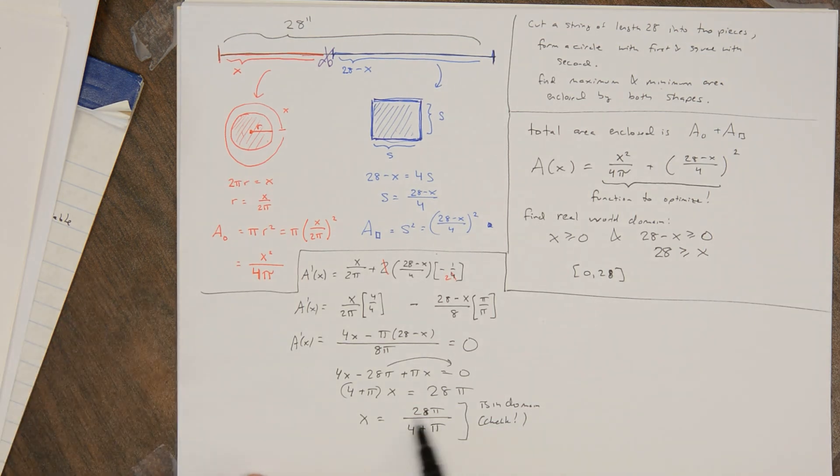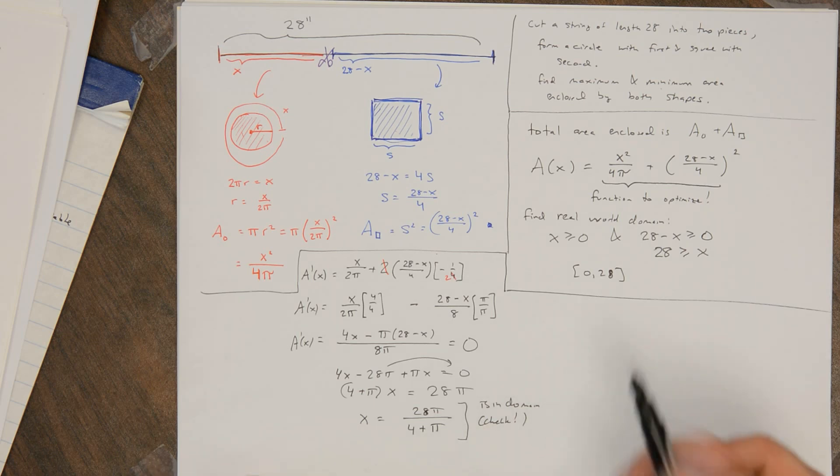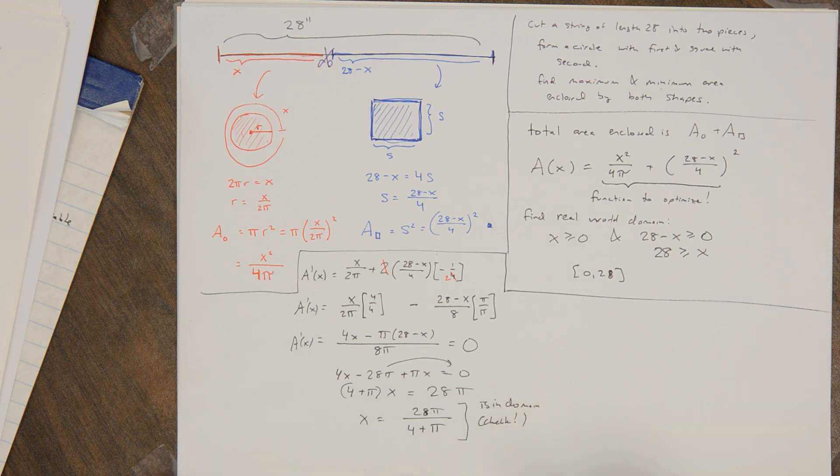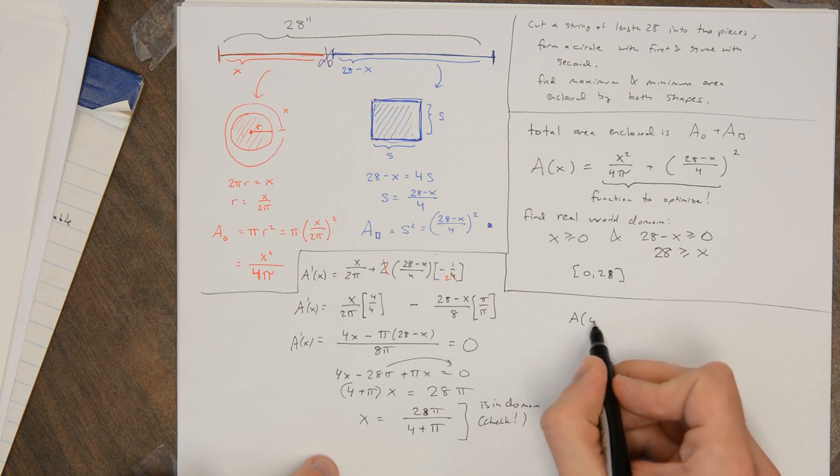So check this. I mean, the sort of idea is that 4 + π is more than 7. So if I replace this denominator with a smaller number, I'm going to get a bigger number. And 28π/7 is 4 times π, which is, you know, between 4 times 3 and 4 times 4. So it's between 12 and 16, and that is in this range. So this is a critical point, and it is in our domain. Now we just need to evaluate our function at the critical point and the end points.